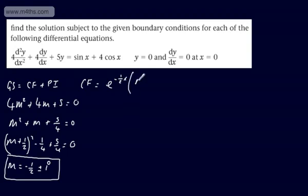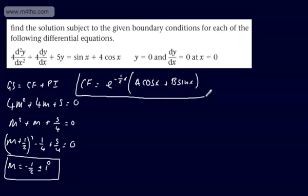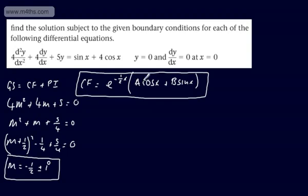That means we write the complementary function in the form — this is what we call a Type 3 — we have e^(−x/2)(a cos x + b sin x), where a and b are arbitrary constants. We have complex roots. If this had been 2i, that would have been cos 2x and b sin 2x.